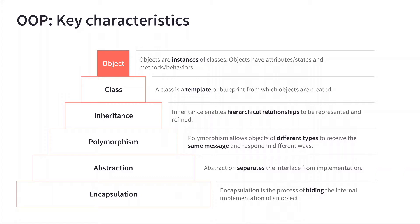Above encapsulation we have abstraction, where we separate the external look of the class — what we call the interface — from its implementation, which is how it's actually coded inside. Encapsulation keeps that code hidden from the rest of the world, and abstraction is the way you separate how it's implemented internally from how it's seen and interacted with from the outside world.